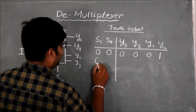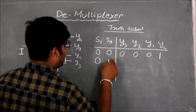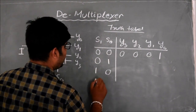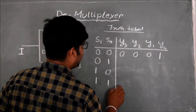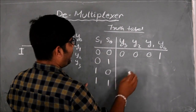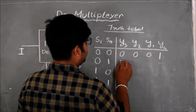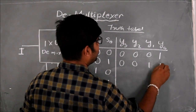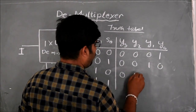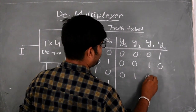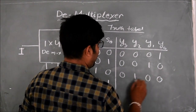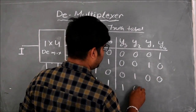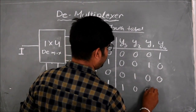Likewise for the 0,1 combination Y1 is active; for the 1,0 combination Y2 is active; and for the 1,1 combination Y3 is active. The truth table entries follow this pattern with the selected output equal to I and all others equal to 0.